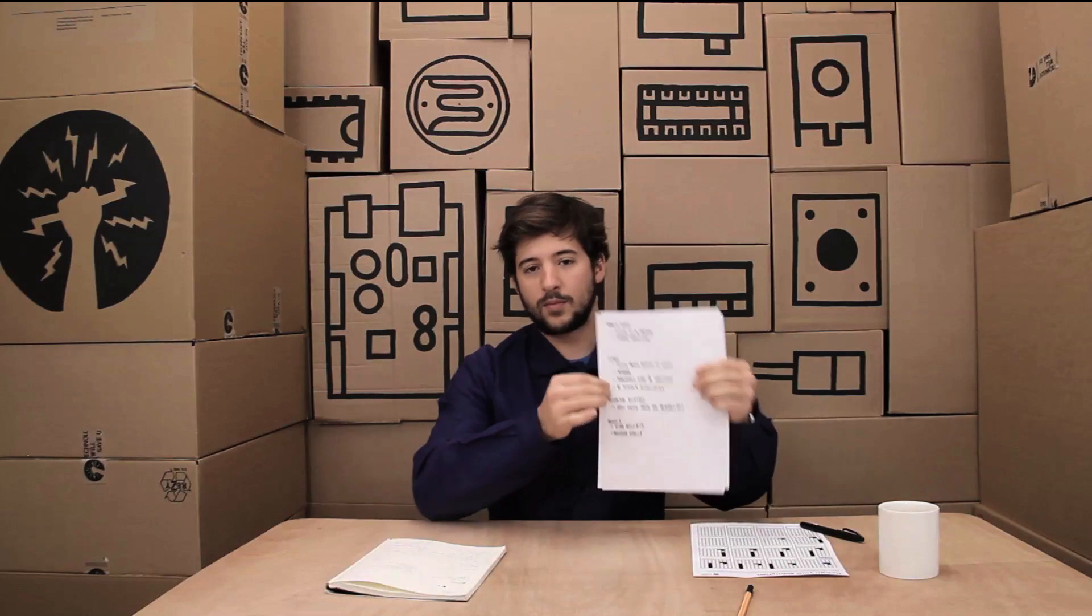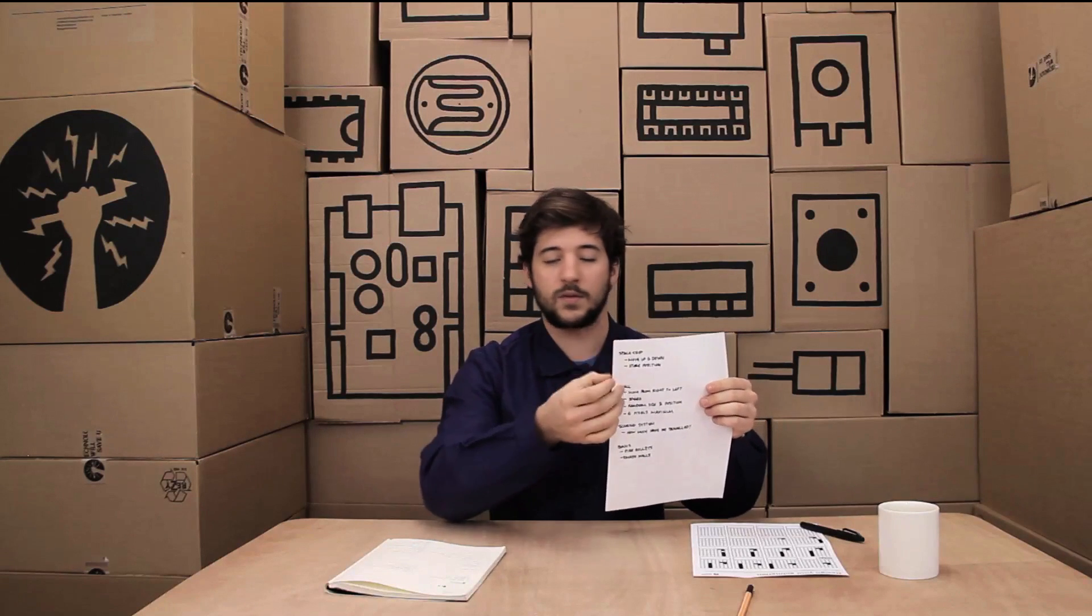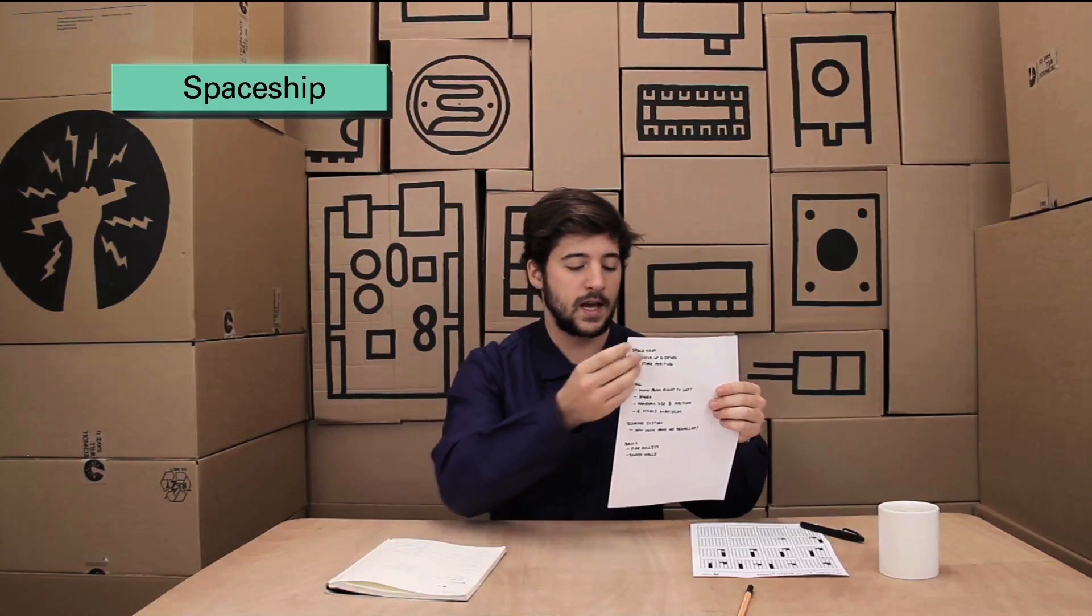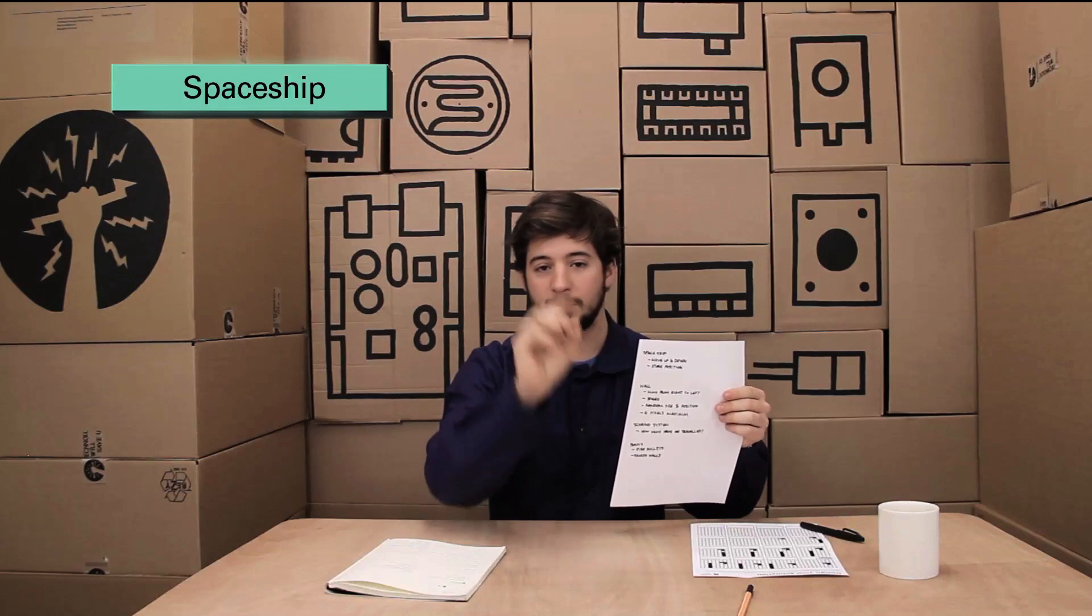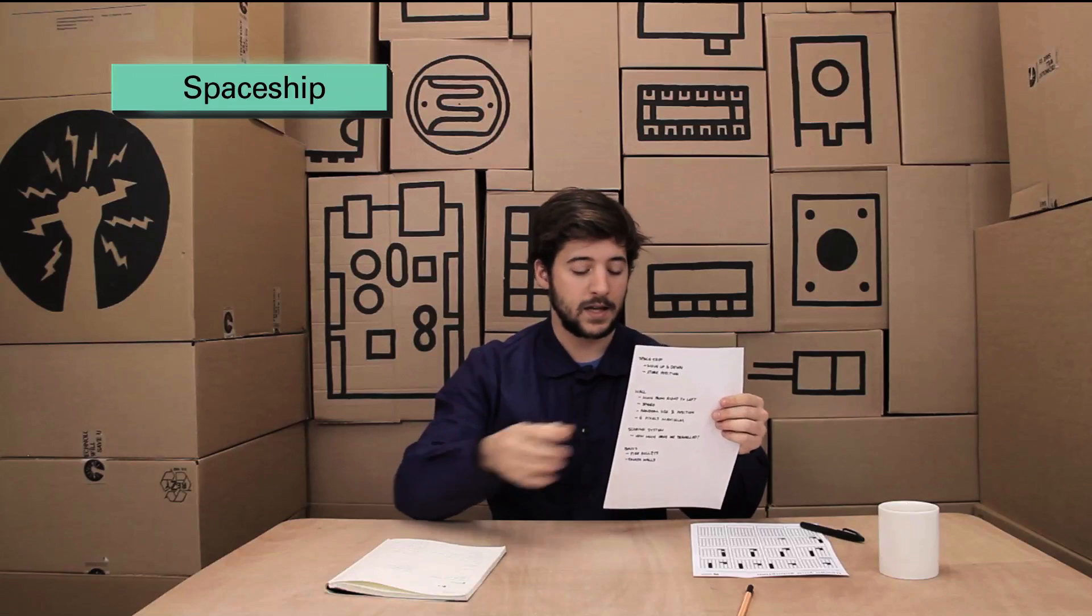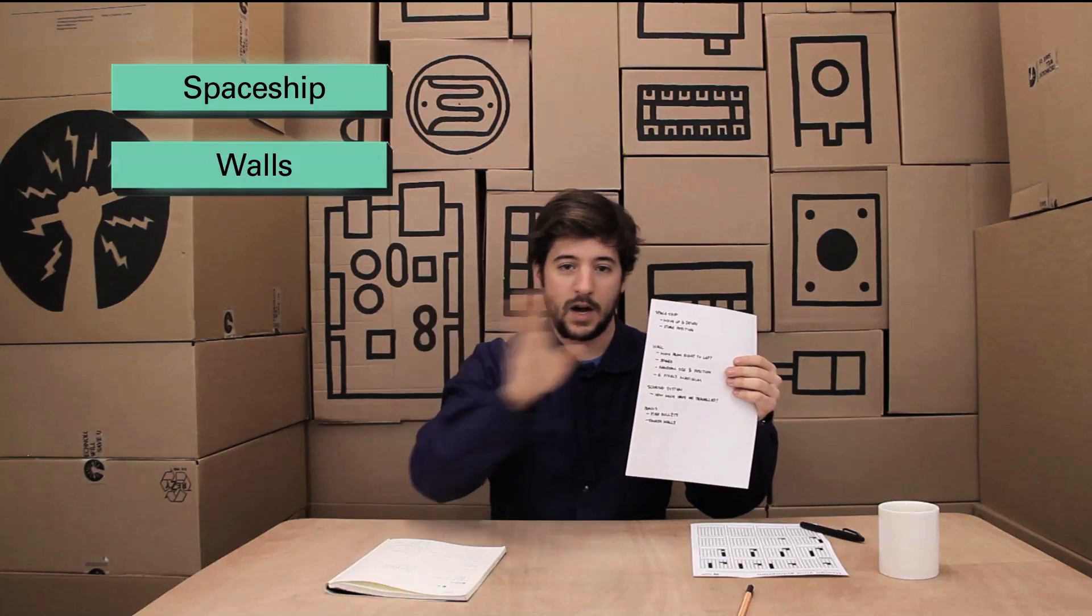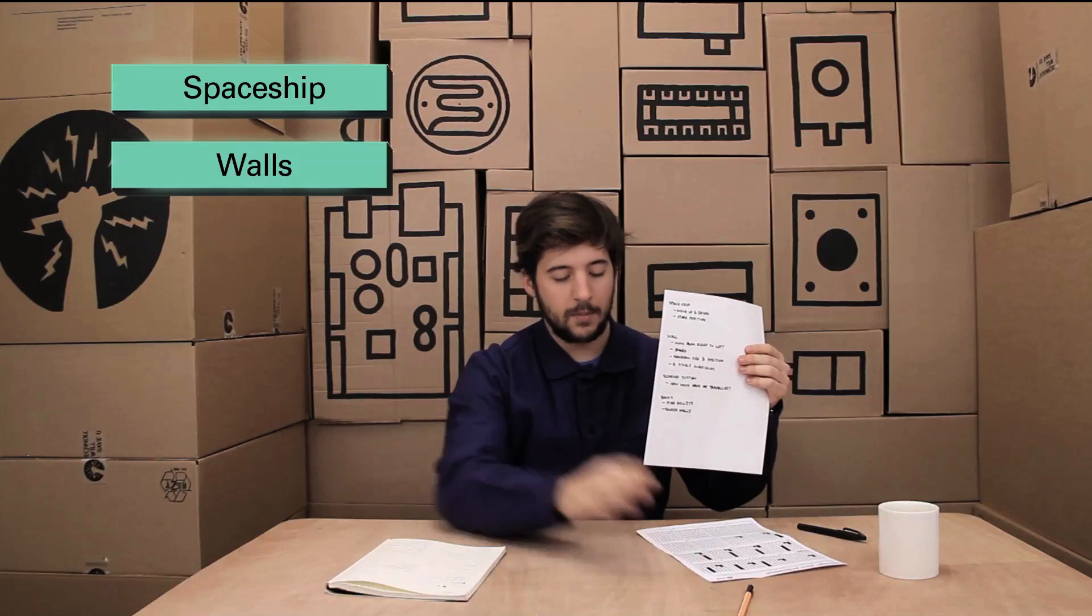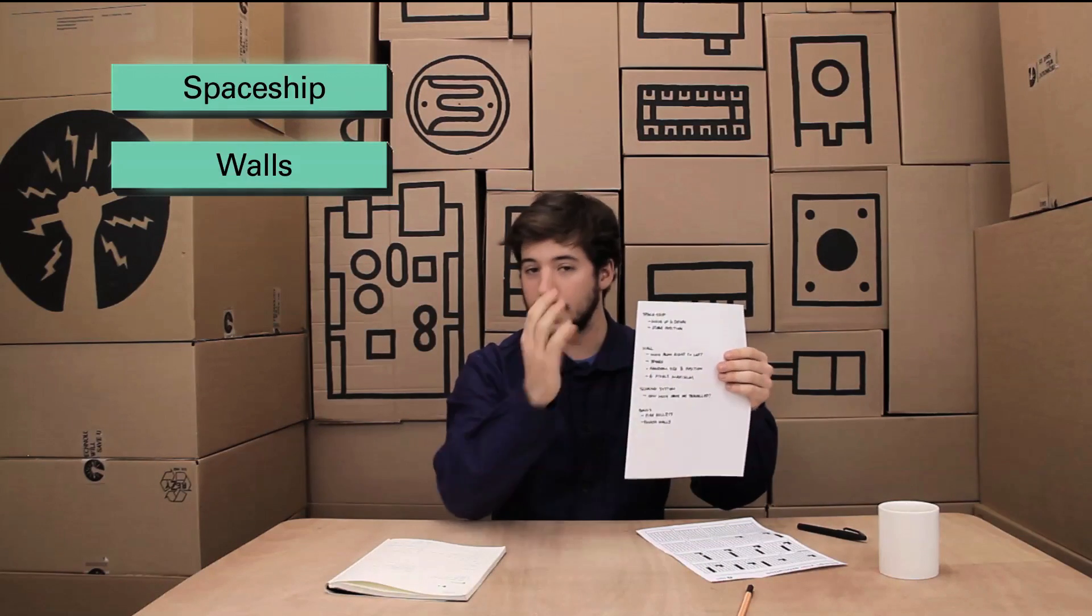The way you would go about programming this is that you would start with the simplest thing. So we would start with the spaceship, for example, and we would say okay, let's set it on the screen and then let's move it up and down. Once you do that, you do in a separate sketch the walls, so you make and you basically try and figure out a way to move the walls from right to left with different speeds.